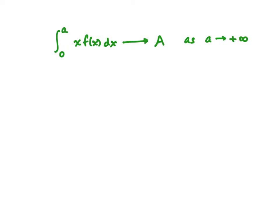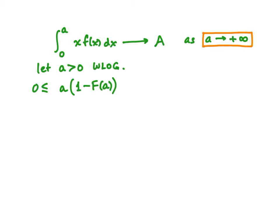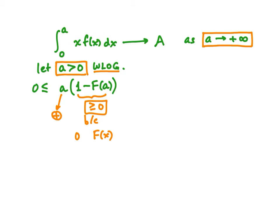Now consider the quantity A times (1 − F(A)). The first thing to notice is that it's non-negative when A is positive — without loss of generality, since we'll let little a go to infinity. This factor A is positive, and (1 − F(x)) is always non-negative since every CDF has values between zero and one. So we have a strictly positive factor times a non-negative factor, giving a non-negative quantity.